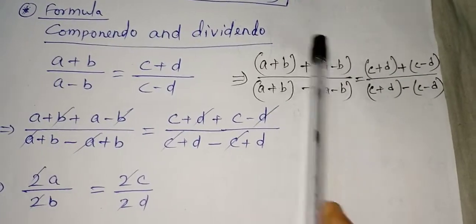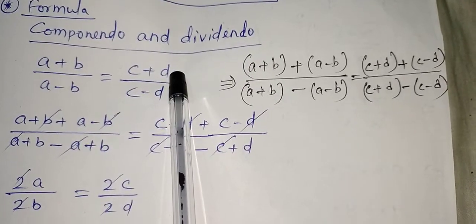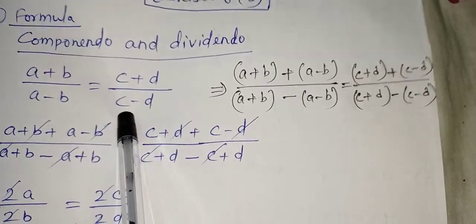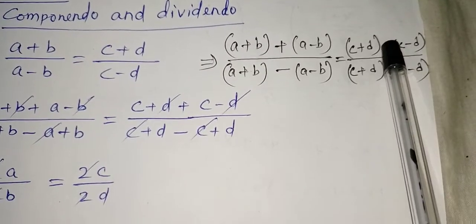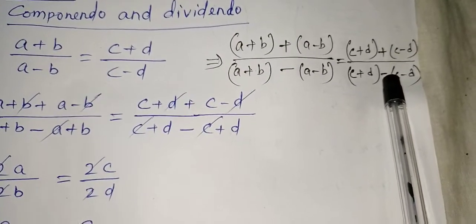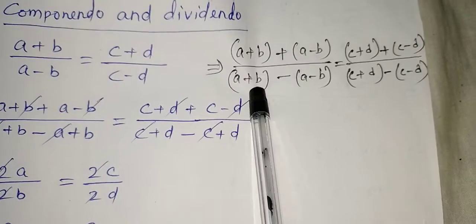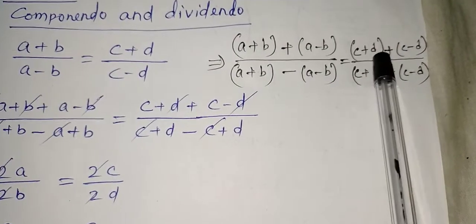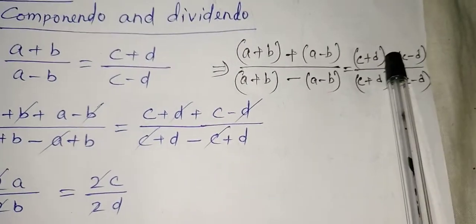Whatever we do on the left-hand side, we do the same on the right-hand side. So for (c + d)/(c - d): the numerator (c + d) is written at the top and bottom, and the denominator (c - d) is also written at the top and bottom. At the top we put plus in the middle, and at the bottom we put minus in the middle — just like on the left side.